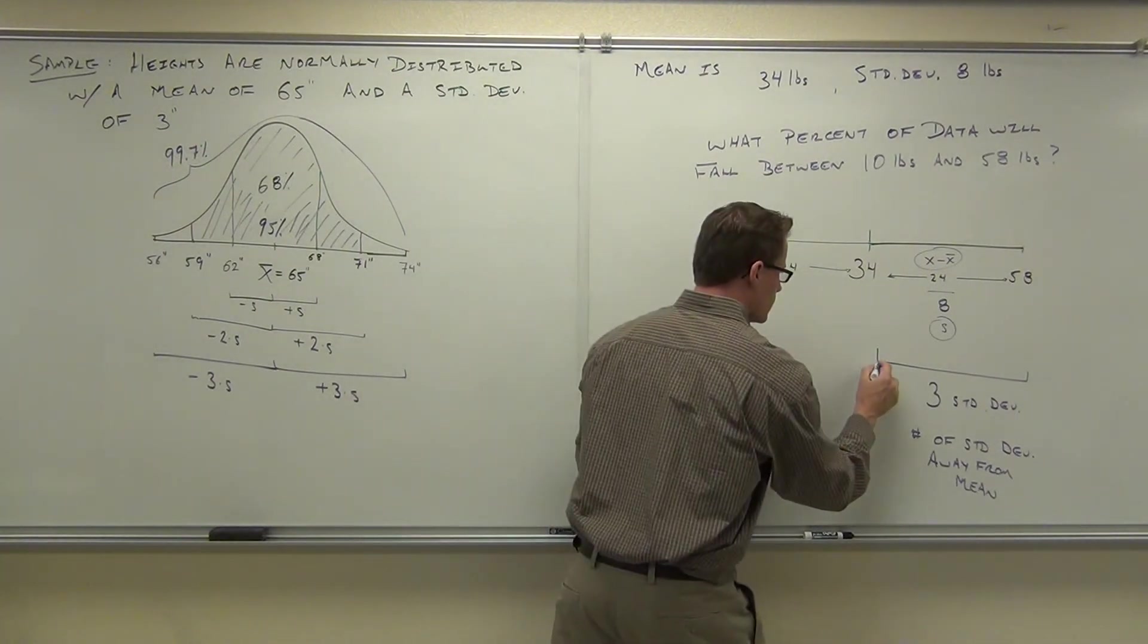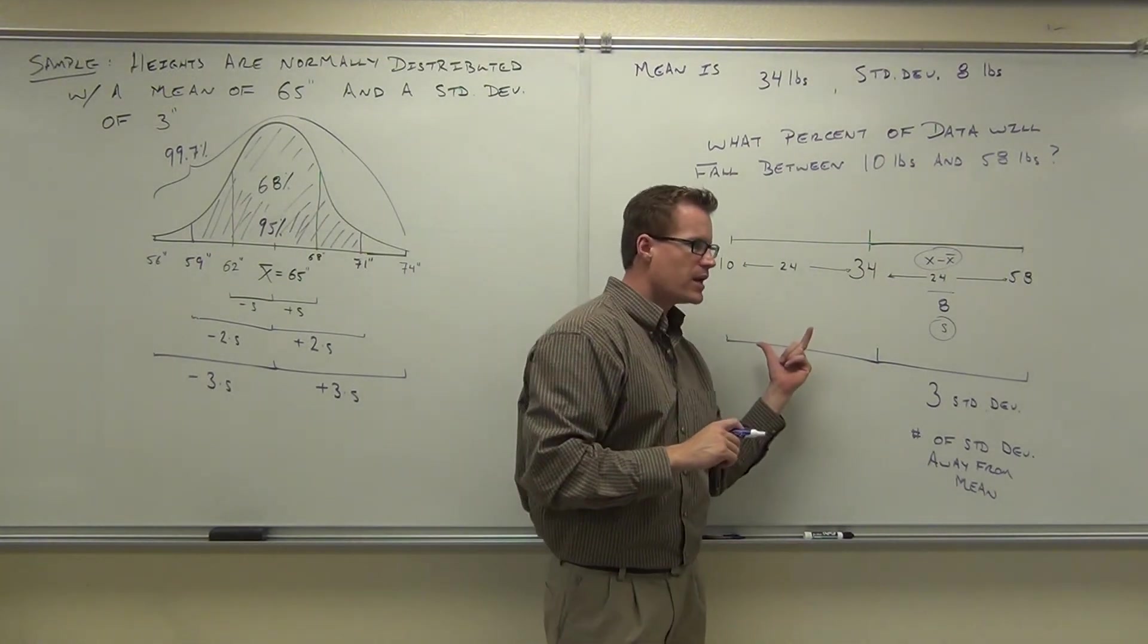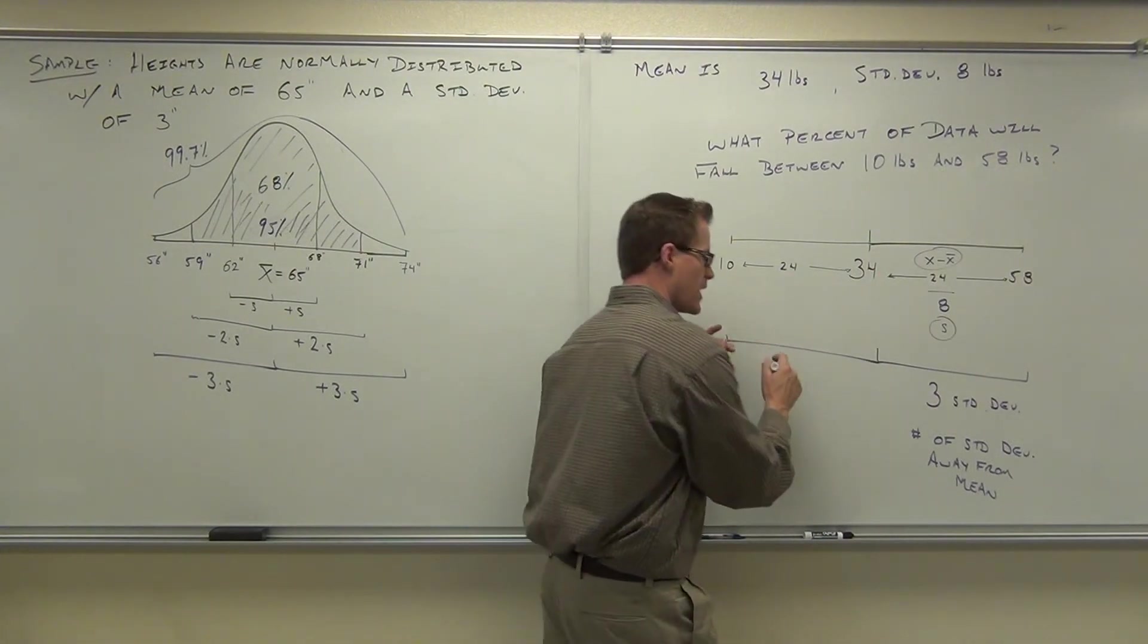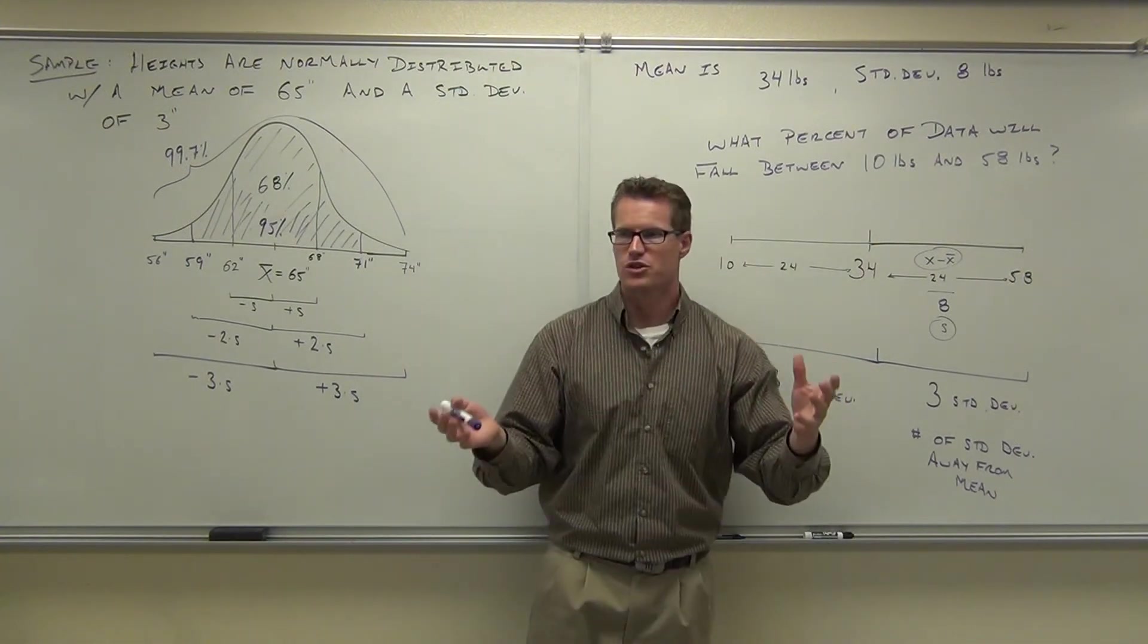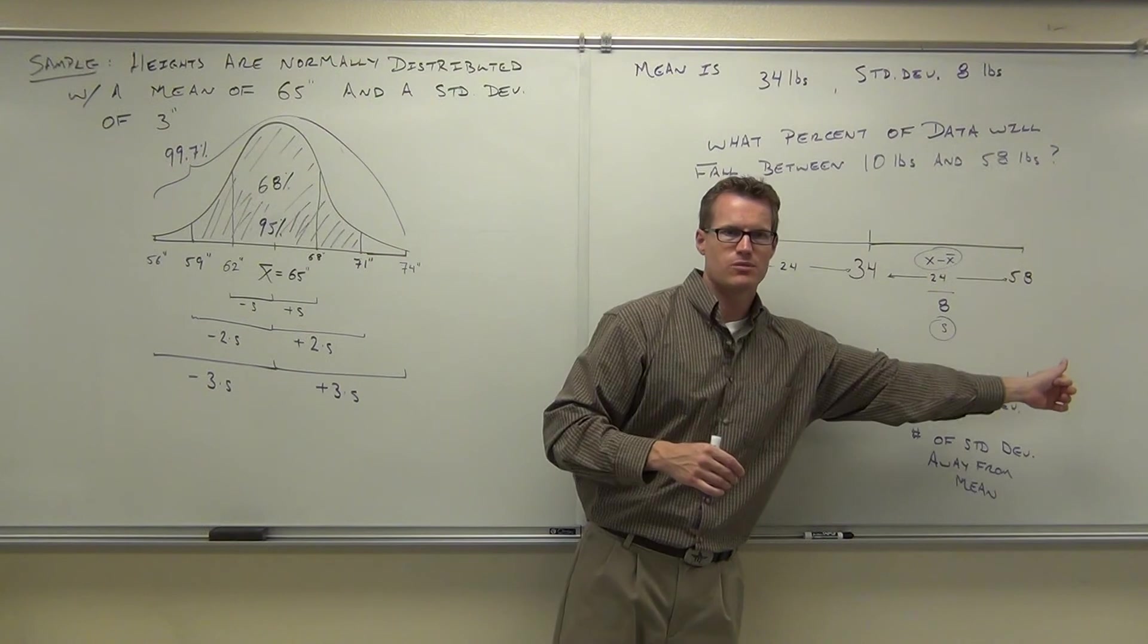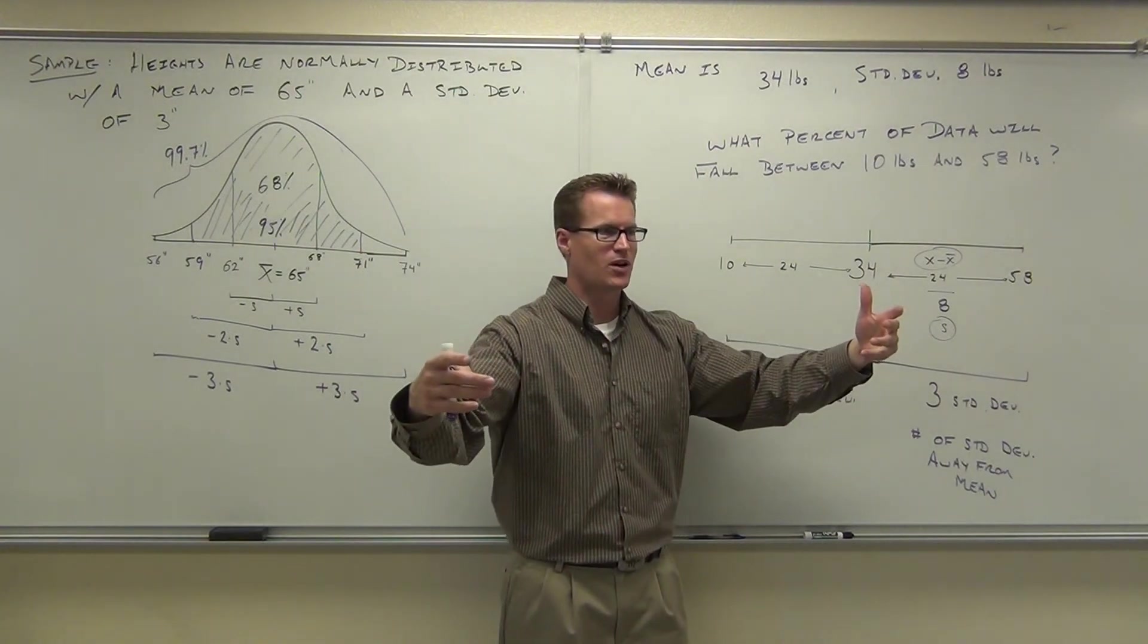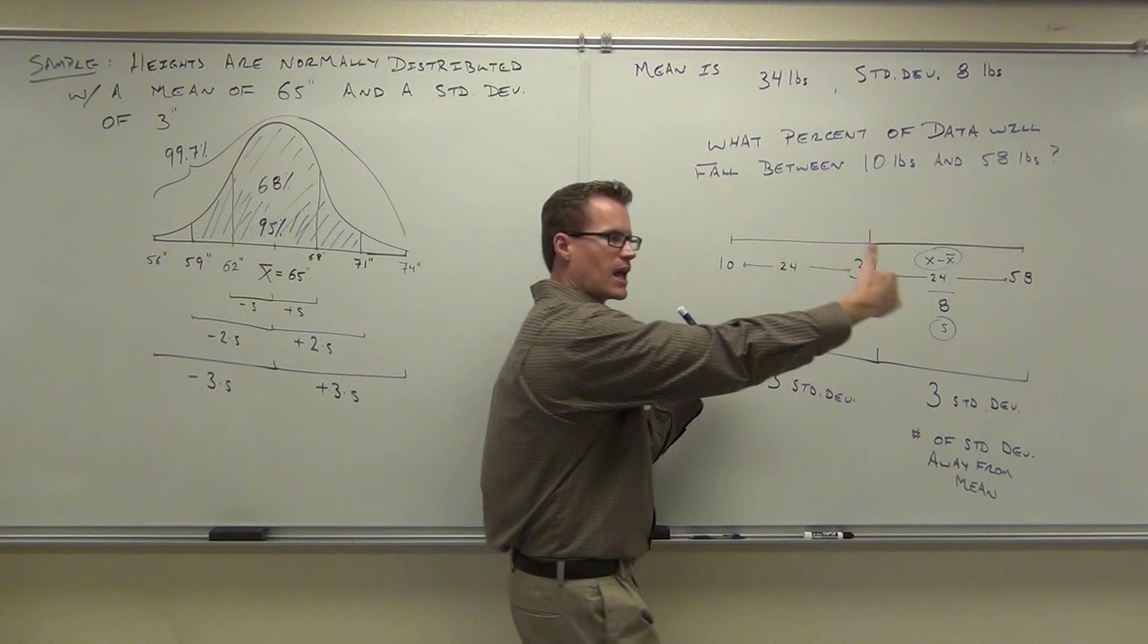We do the same thing over here. We do the same thing over here. We're not going to quite worry about the sign right now because I know if I take x minus x bar, I'll get a negative. Now, that's going to help us out in the next section. For right now, I just want you to get the concept down. The distance is still 24. We're still dividing by 8. We're also getting 3 standard deviations. Now, with this information, with knowing that it's normally distributed, with knowing it's centered around the mean, and knowing that you are 3 standard deviations to the left and 3 standard deviations to the right of the mean, can you tell me what percentage of data falls between 10 and 58 pounds, please? That was a huge build-up. There's just like two people. Come on. You should know. What percentage falls within that range? Yeah, that's right. That's 3 standard deviations to the left and to the right.